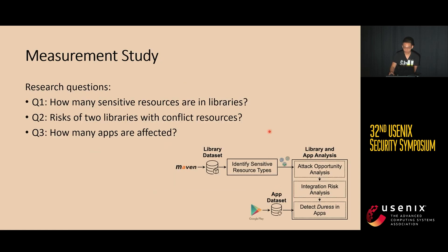In our measurement study, we want to answer three questions. The first is: how many libraries contain sensitive resources that our attacks can target? The second is: how likely can a library's sensitive resources be contaminated by another library if they are integrated into the same app? And the last question is: are there any real-world apps that may have been affected by our risks? This picture presents the overview of our methodology. In the first step, we build a library dataset and an app dataset by crawling Maven Central and Google Play. After that, we identify sensitive library resource types. Then we run three tasks to answer the above three questions.